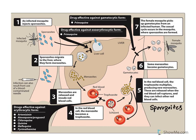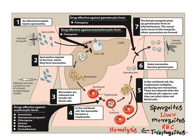Sporozoites enter the liver and develop into merozoites. Merozoites are released from the liver and enter red blood cells, where they develop into trophozoites. These trophozoites cause RBC rupture, known as hemolysis. Hemolysis causes the fever, sweats, and chills. After that, the parasites may return to the liver, causing relapse — meaning organisms that stayed in the liver get reactivated and released into the blood.